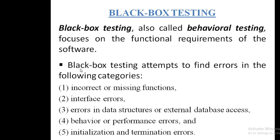With the help of black box testing, we can attempt to find errors in the following five categories. The first one is incorrect or missing functions. The second one is interface errors — if there are any interface errors, as we already discussed in the fourth unit regarding combined interfaces.